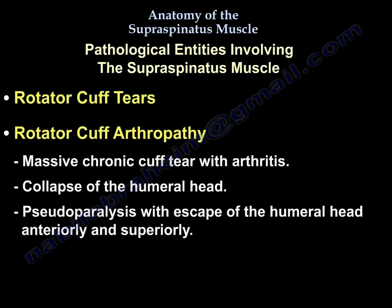The second entity is rotator cuff tear. The third is rotator cuff arthropathy: a massive chronic cuff tear combined with arthritis, collapse of the humeral head, and pseudoparalysis with escape of the humeral head anteriorly and superiorly.